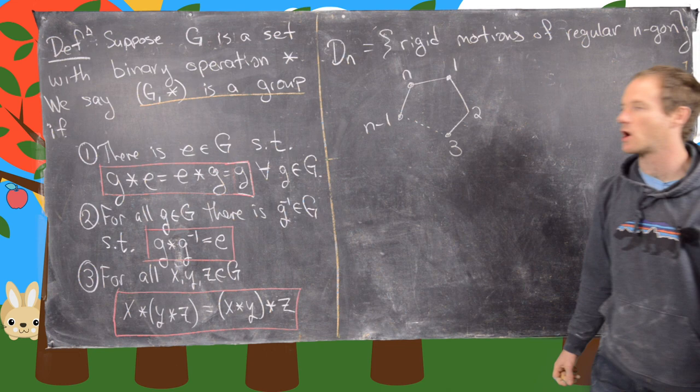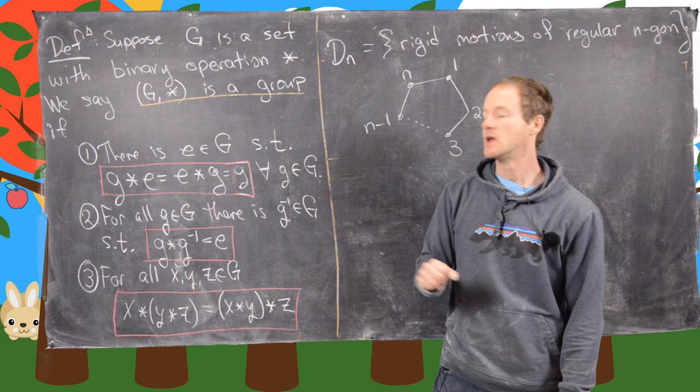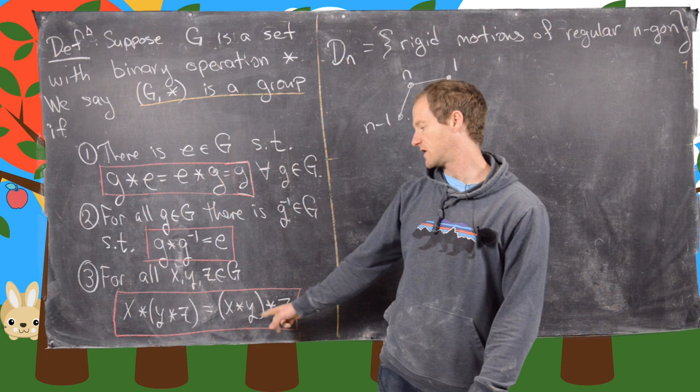In this video we want to look more about the dihedral group. First, let's recall the definition of a group. It's a set together with a binary operation satisfying three axioms: we have an identity element that when combined with any other element doesn't change it, an inverse for every element, and the associativity property.